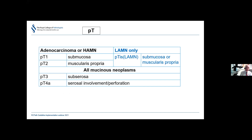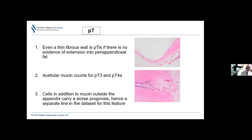Using pTis for LAMNs reflects the very low risk of progressive disease when the tumour does not spread beyond the muscularis propria — though the risk is not zero, and pTis LAMNs are occasionally associated with pseudomyxoma peritonei, presumably due to a prior subclinical rupture that has since healed. Importantly, even a very thin fibrous wall counts as pTis if there is no extension into peri-appendiceal fat. Acellular mucin also counts for pT3 and pT4A staging.